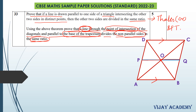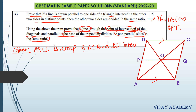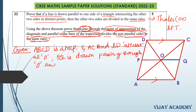Now we write the given data. Given: ABCD is a trapezium. The diagonals AC and BD intersect at O. Line PQ is drawn passing through O, which is the point of intersection of the diagonals, and parallel to the parallel sides AB and CD.